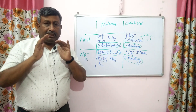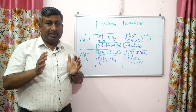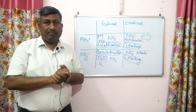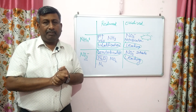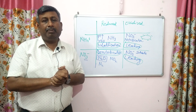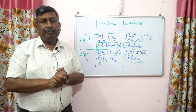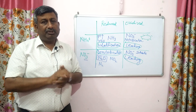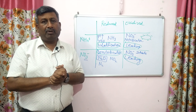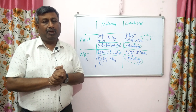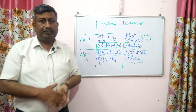Because of these processes, nitrogen is lost from the soil and not available to plants. This is the reason that the availability of nitrogen to plants is very poor, and these processes are responsible for nitrogen loss. Thank you very much.